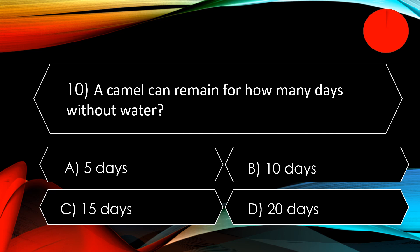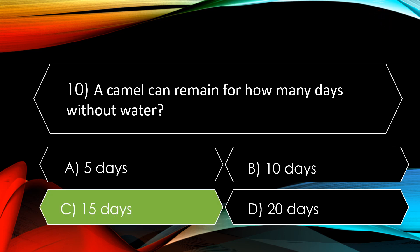The next and last question: a camel can remain for how many days without water? Options are A. 5 days, B. 10 days, C. 15 days, D. 20 days. The correct option is C. 15 days — camels can survive up to 15 days without water. One of the reasons is because of their humps — they store fat in their humps, not water, and can use this to go longer without water in the desert.